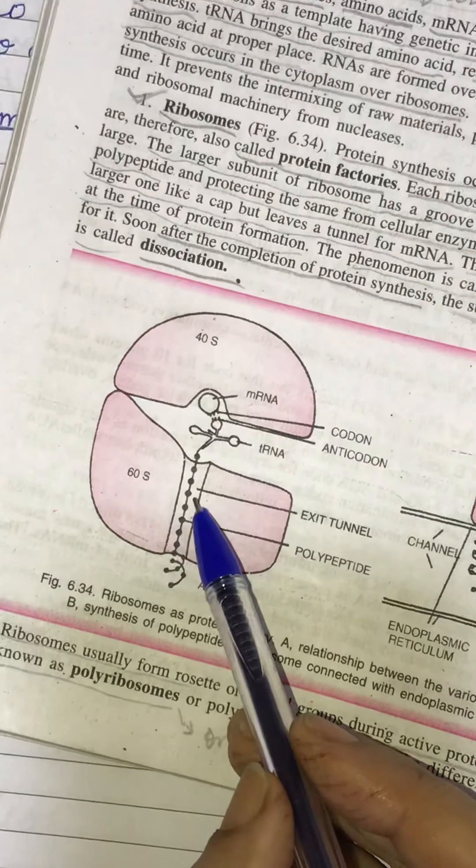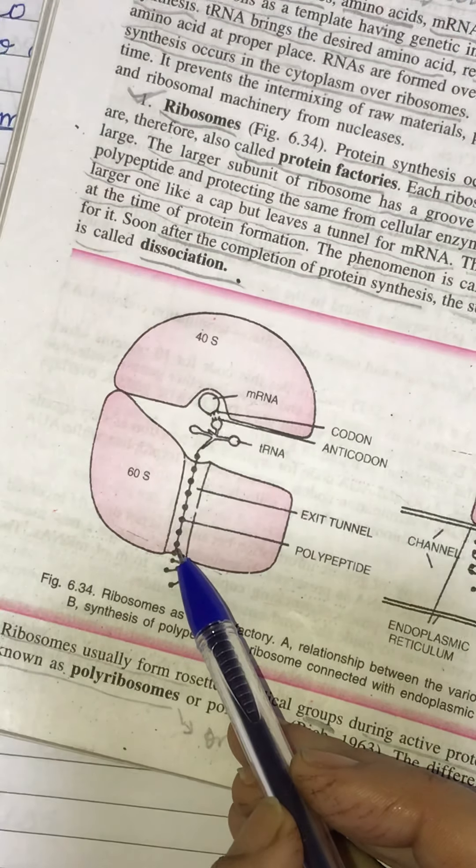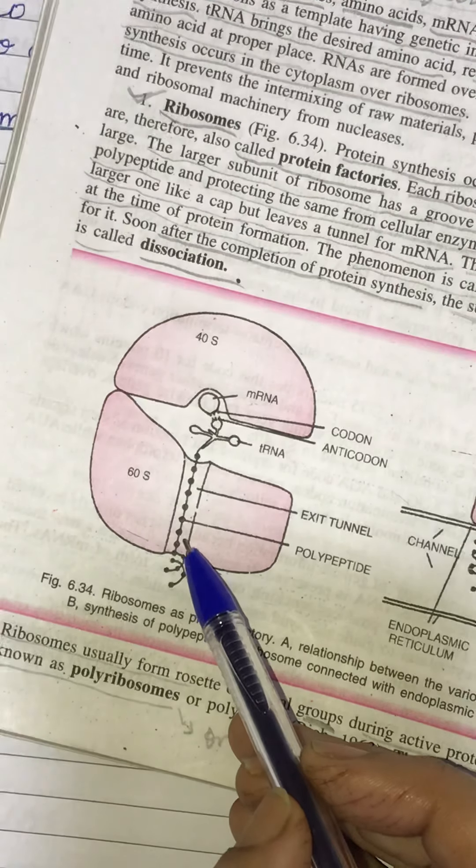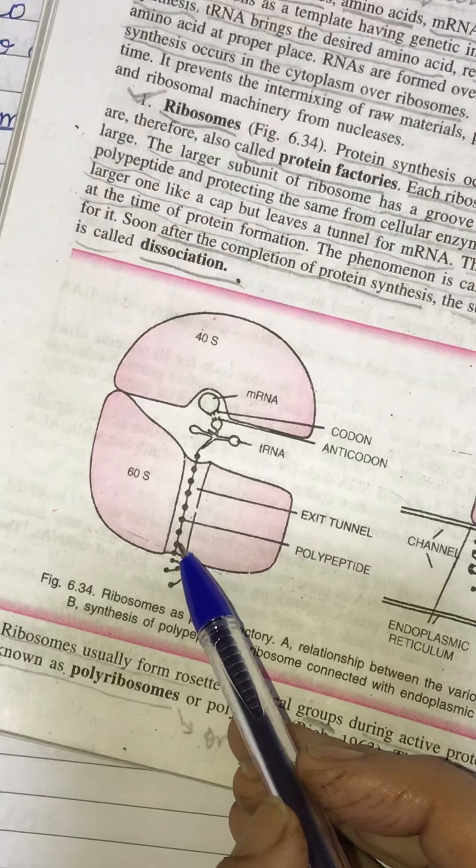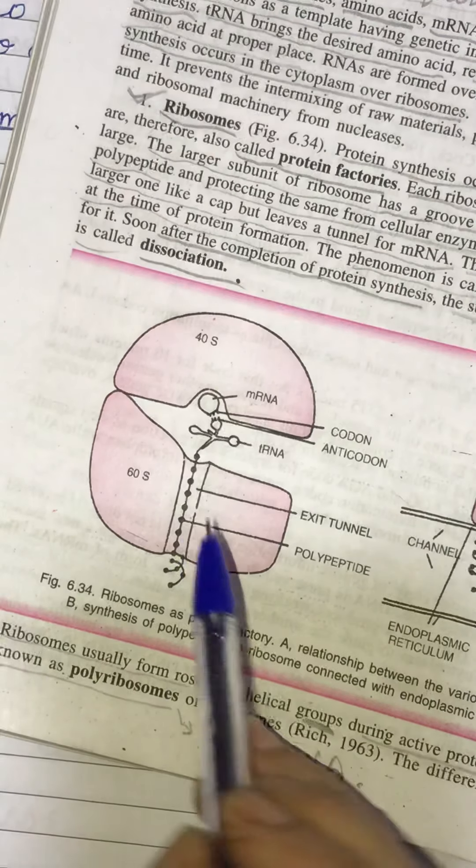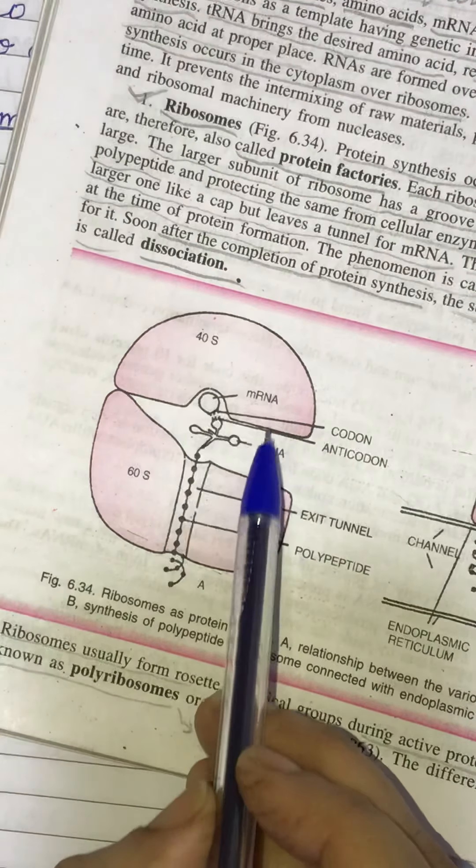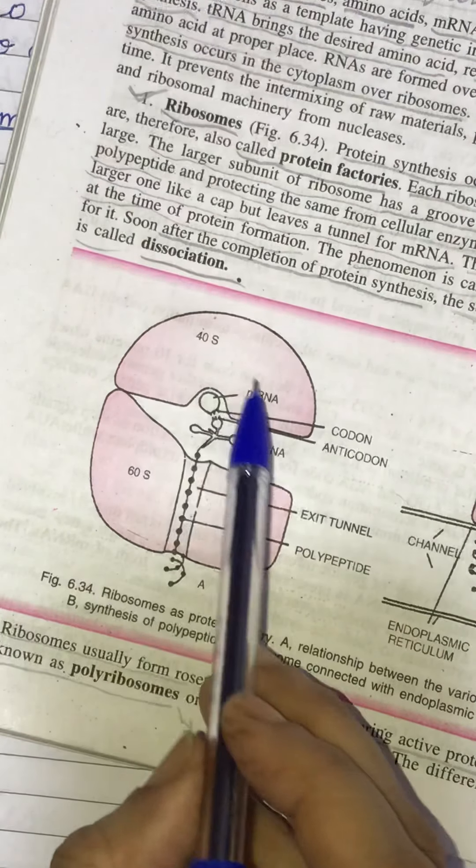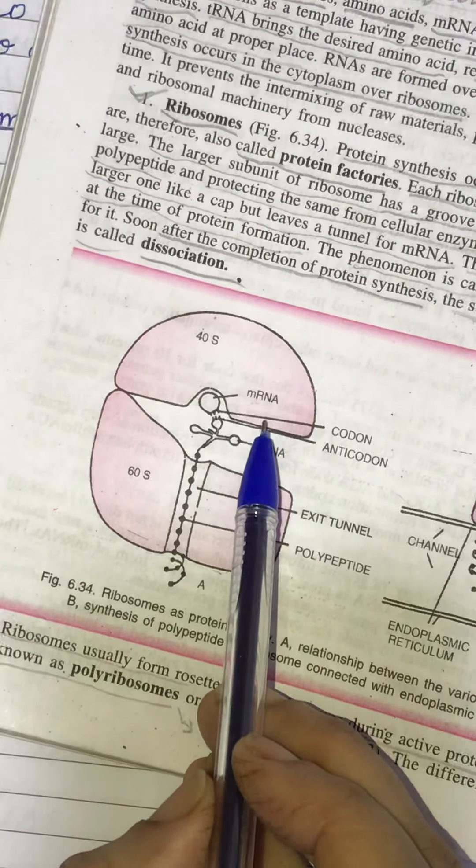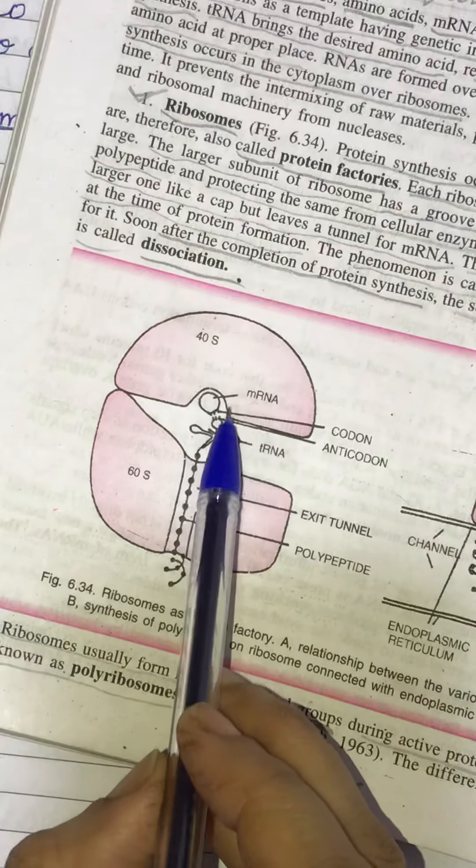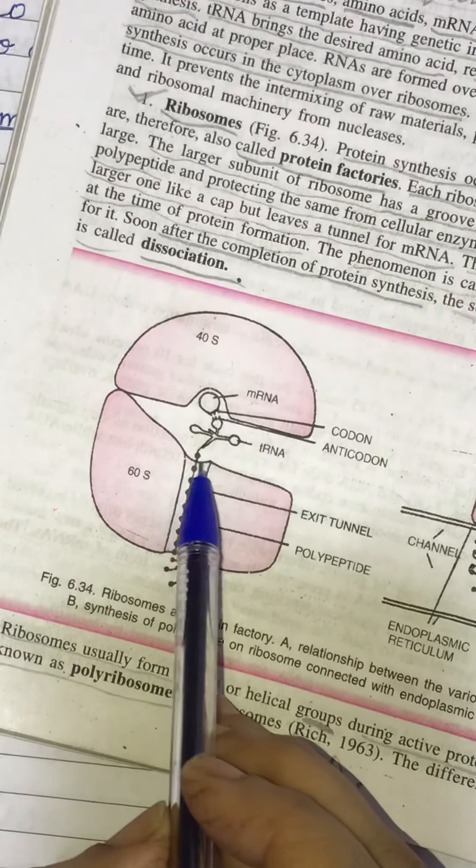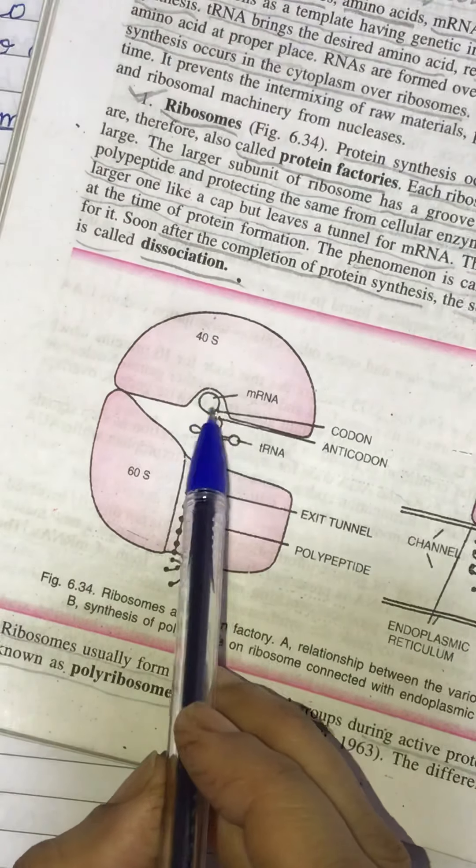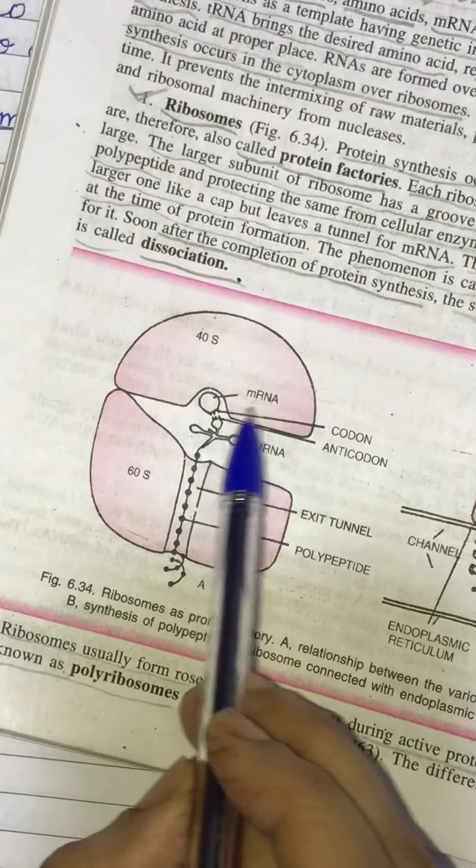Why is it first there in the groove? So that it is not broken down by the cellular enzymes. It is protected from the cellular enzymes. And the smaller subunit fits over the larger subunit of ribosome like a cap. You can see it like a cap. But here it leaves a tunnel. You can see this tunnel also. It leaves a tunnel for messenger RNA. Here it is. It fits over here. So it is a tunnel.